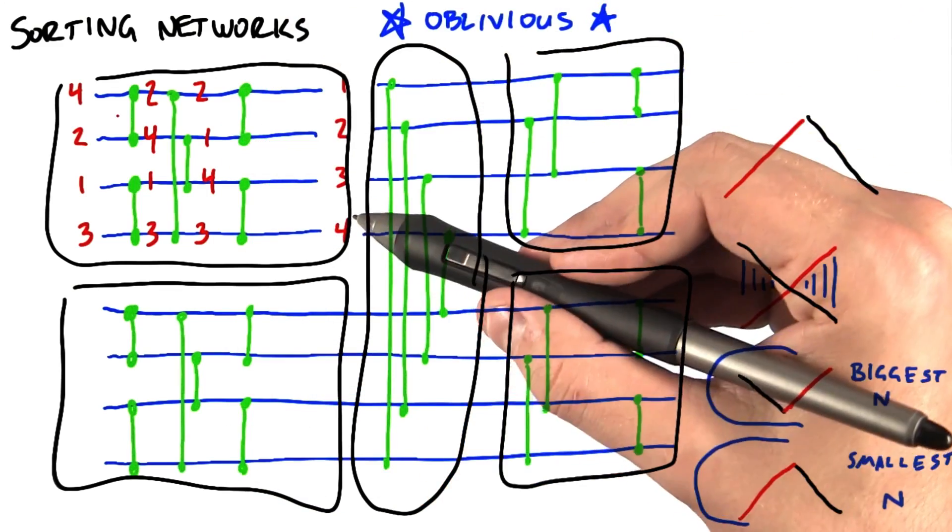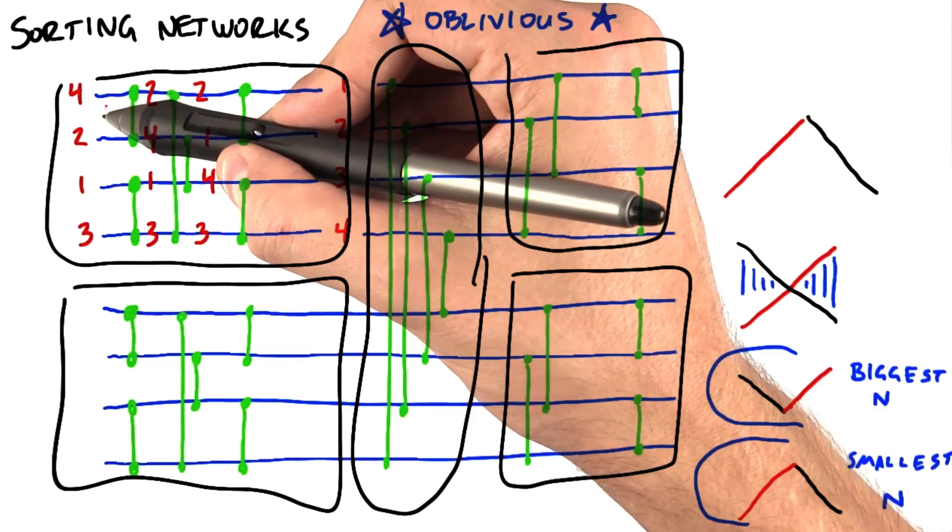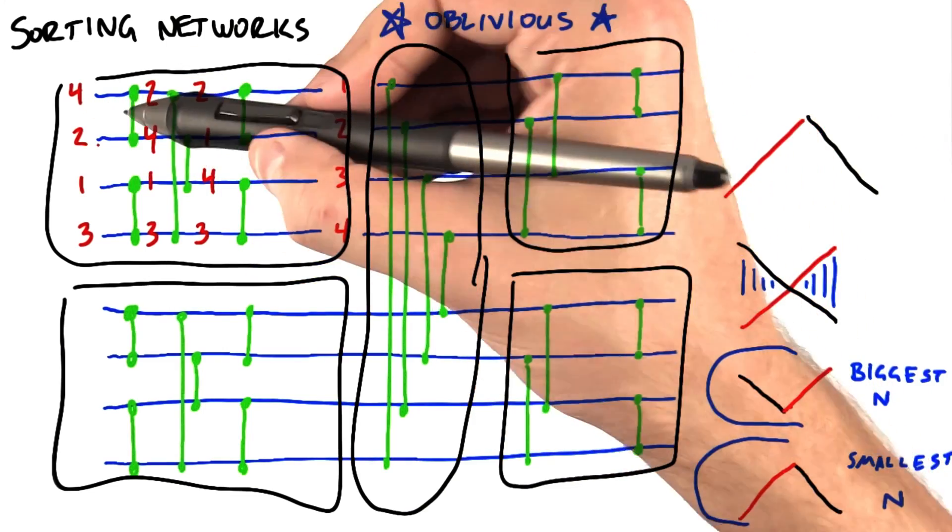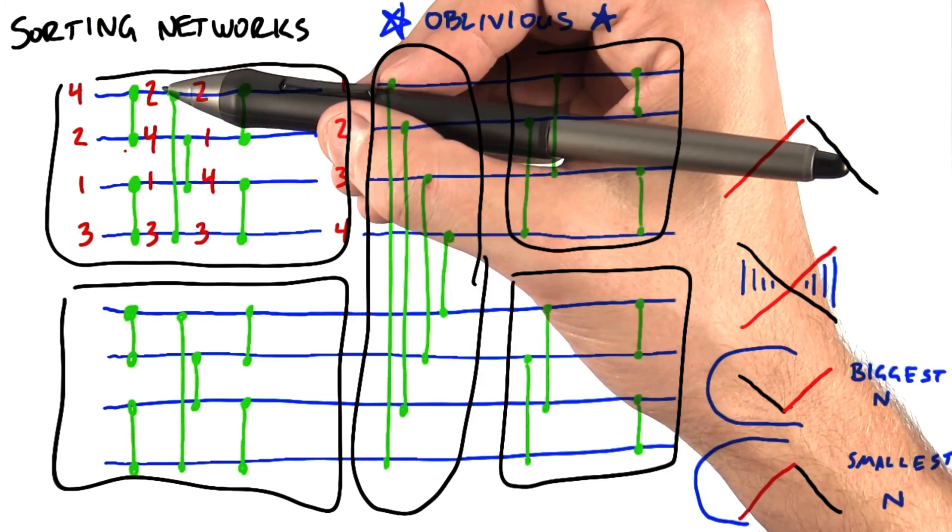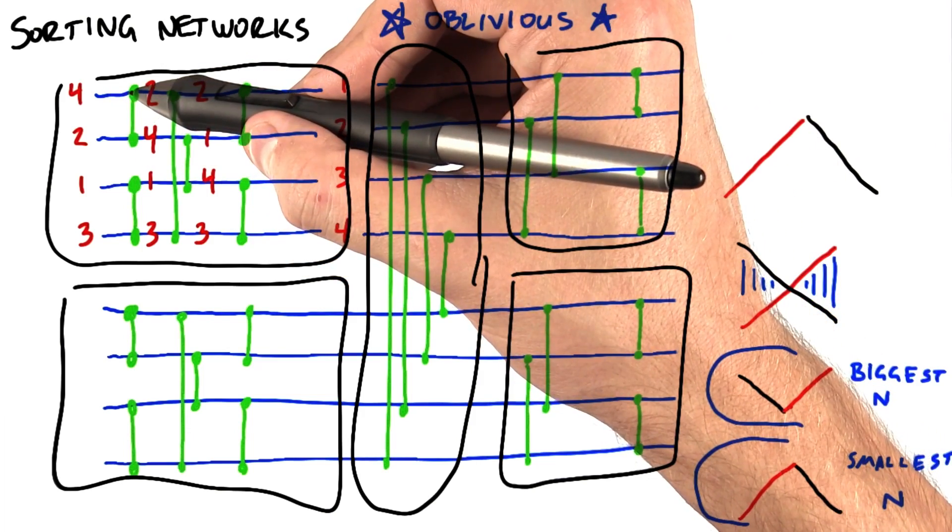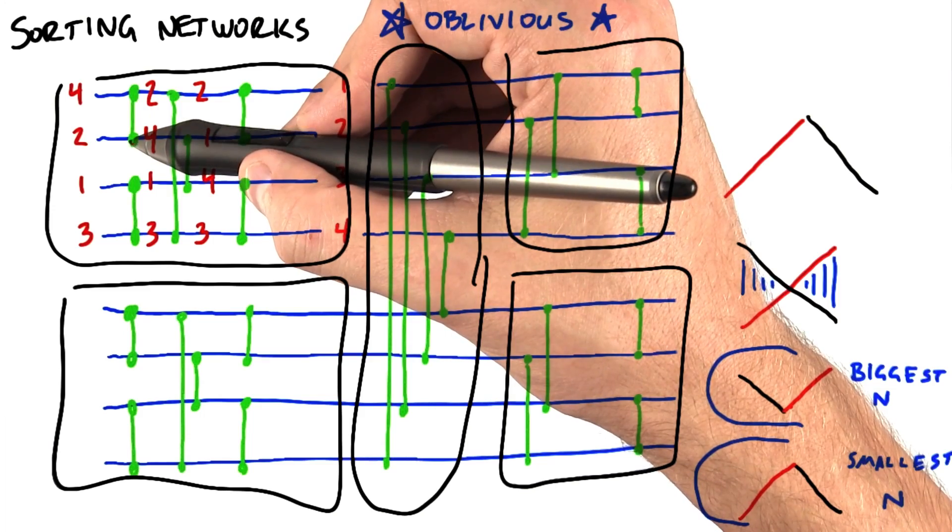For each comparison, each thread simply needs to know if it's keeping the smaller or larger value. So we're actually doing each comparison twice, once on either side of the comparison, and the only difference is that one side of the comparison will keep the smaller element and one side will keep the larger element.